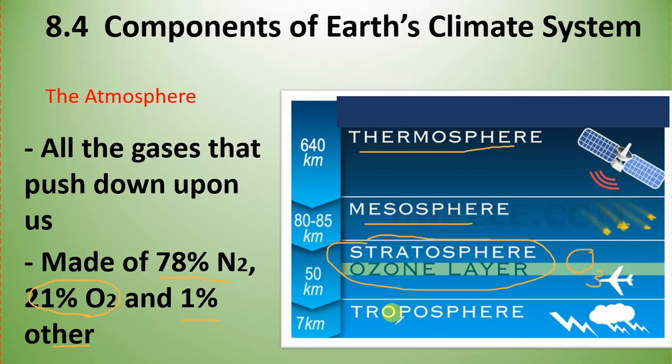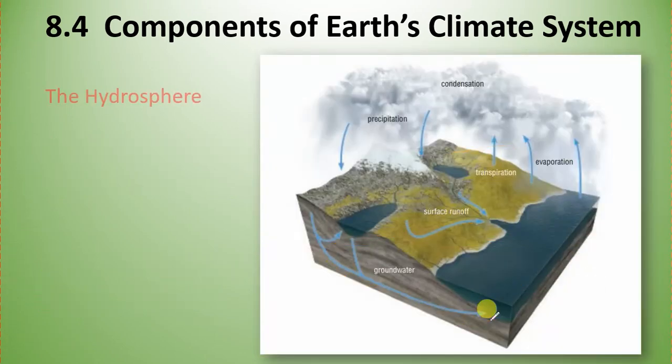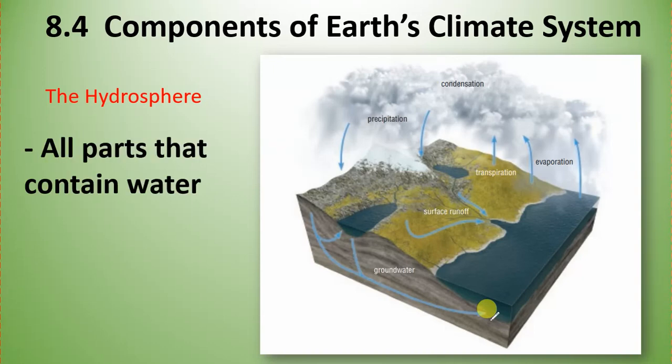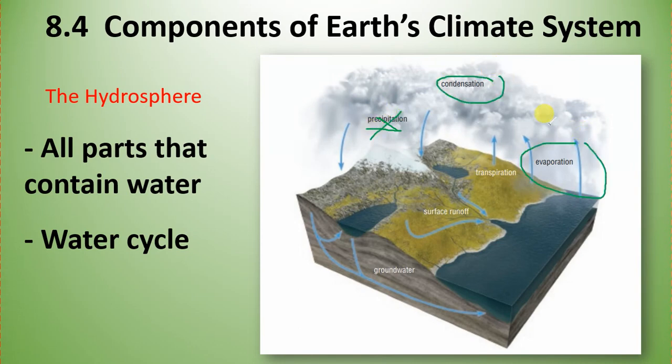Now look at the hydrosphere here. It's essentially all parts that contain water - your water cycle. Really the two main parts of this are condensation and evaporation that are cycling here. Water evaporates, it condenses, and then it rains back in the form of precipitation. So there's, in a nutshell, your water cycle.